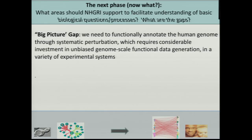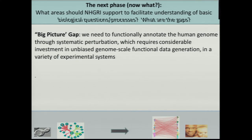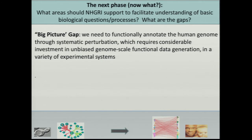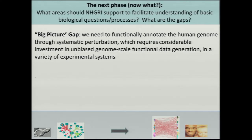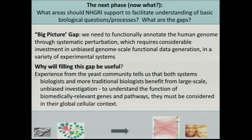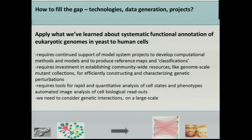In the context of these genetic interaction profiles, reflecting on the questions posed to us for this workshop: what are the gaps we need to fill through potentially ENCODE projects? We do need to move on to functionally annotate the human genome, and we've mainly been talking about regulatory elements. I would argue you need to combine that with perturbation of coding elements to make comparative analysis. This requires considerable investment in unbiased genome-scale data collection in a variety of experimental systems. We need to apply what we've learned about systematic annotation from yeast to human cells.